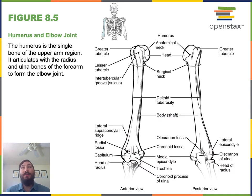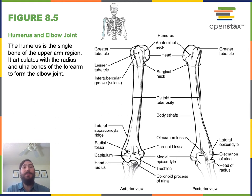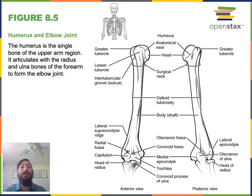The humerus is the large long bone found in the brachial region that contacts the scapula to form the glenohumeral joint on its proximal end. The distal end of the humerus forms the elbow joint, also known as the humeral ulnar joint, by contacting the ulna.